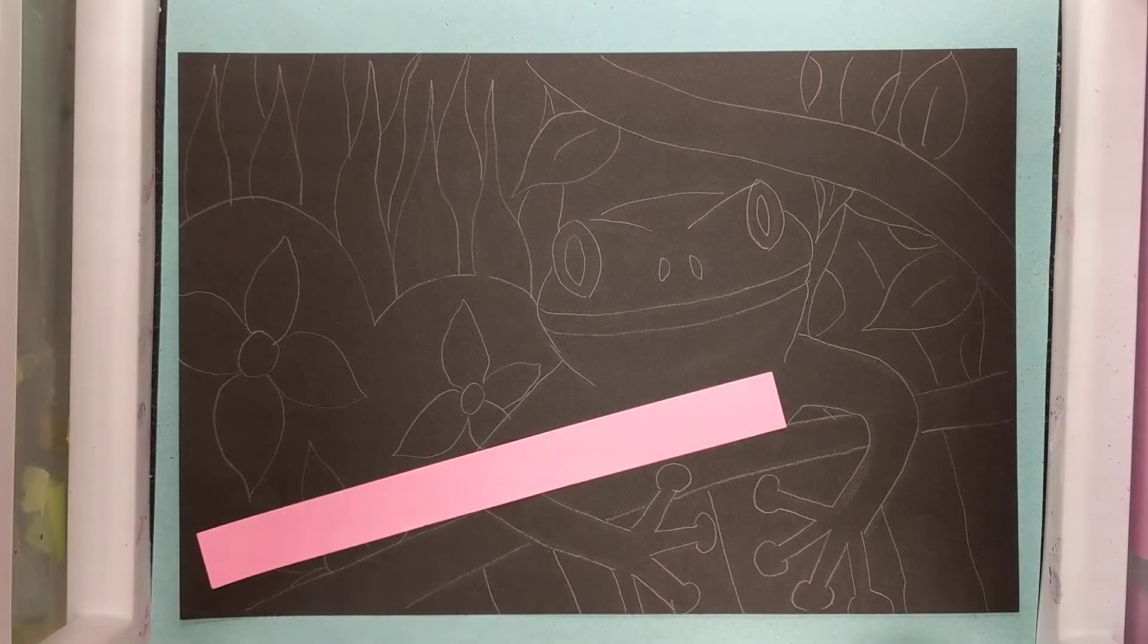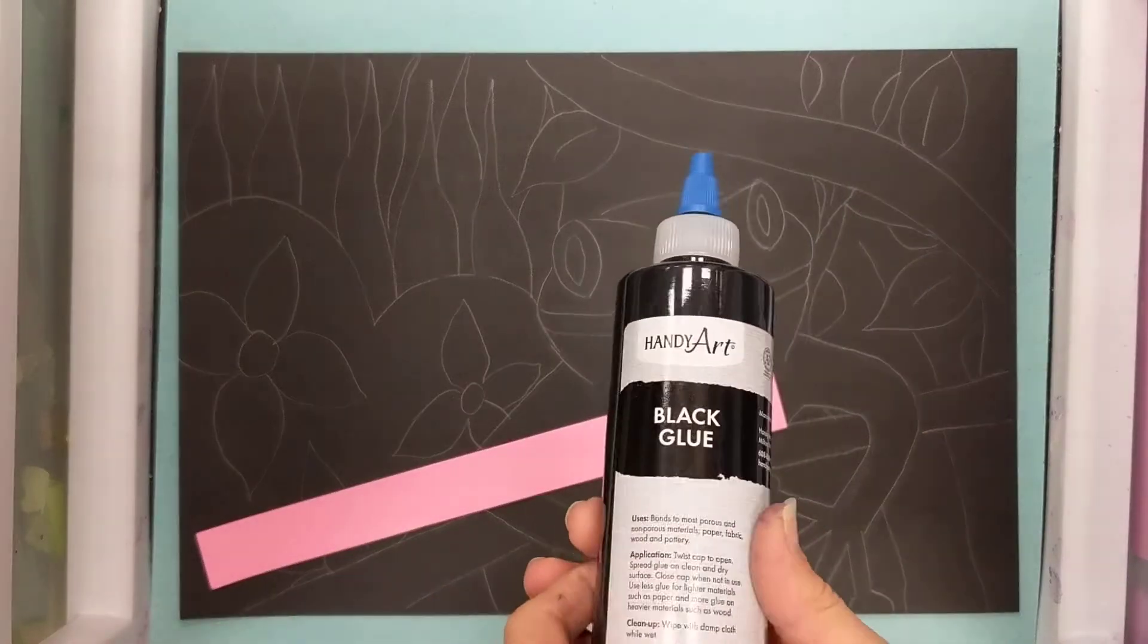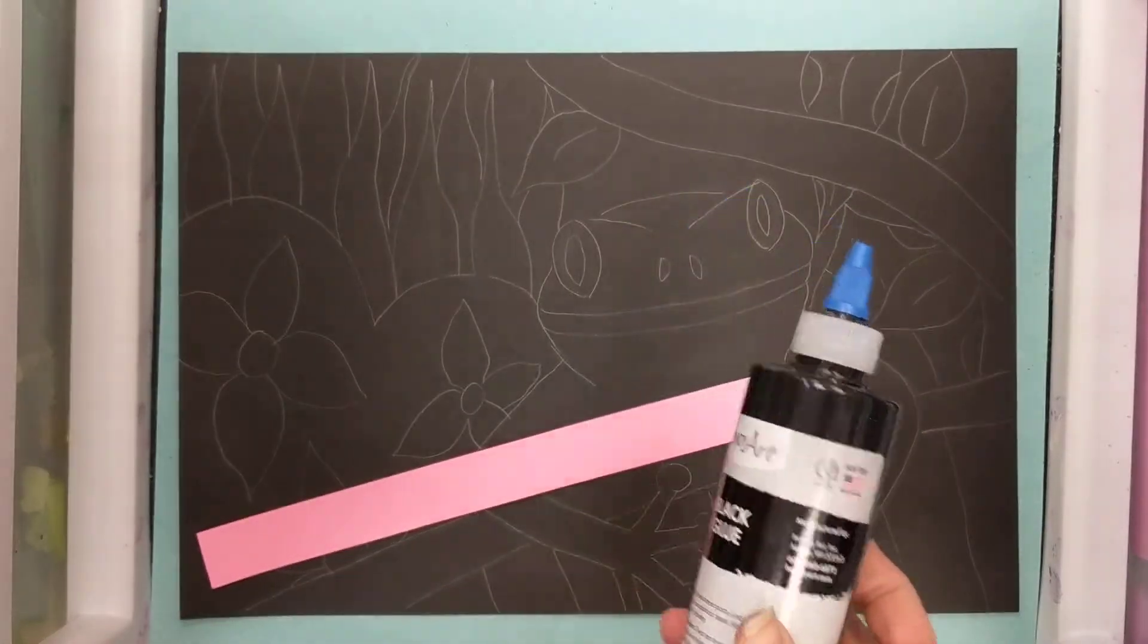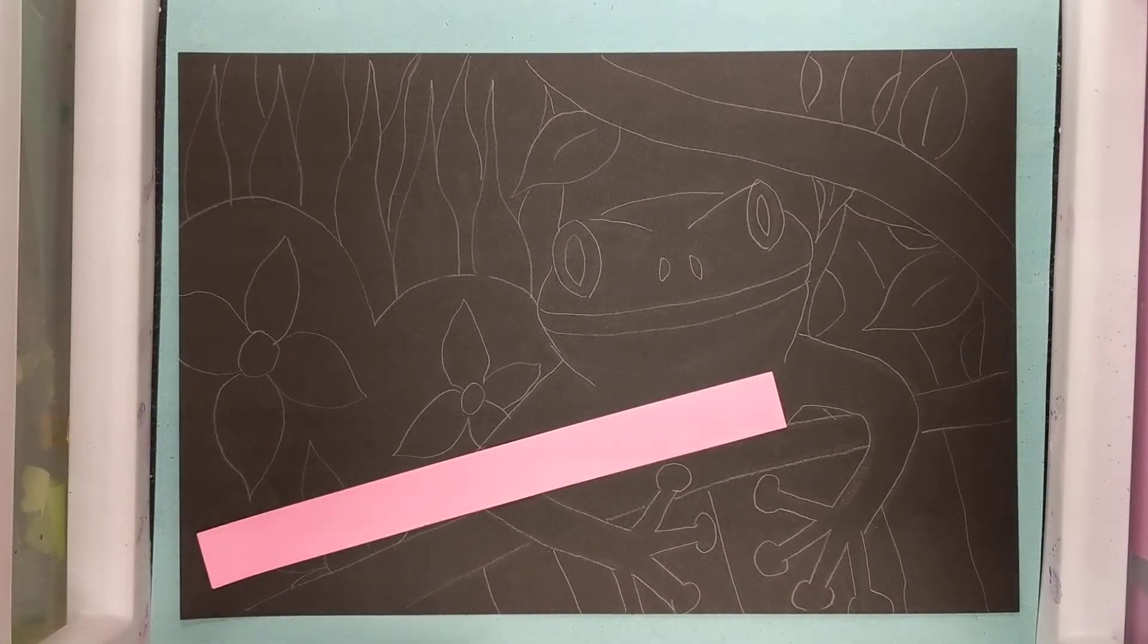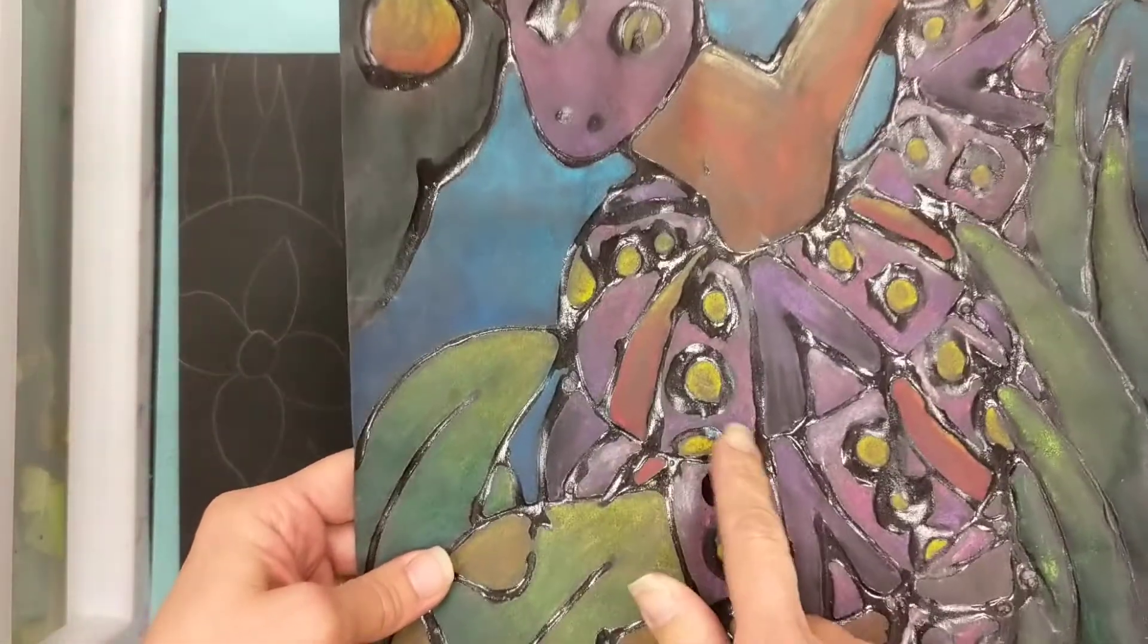Okay artists, today we are going to do step two on our animal chalk art. We are going to be using black glue to highlight all the lines so that we create boundaries or areas that we're going to then fill in with chalk.